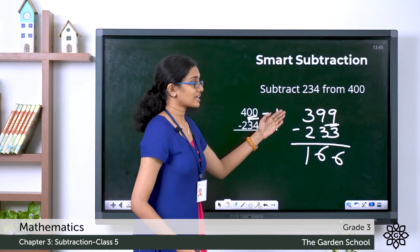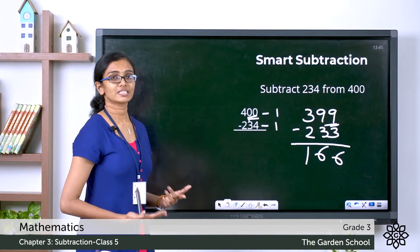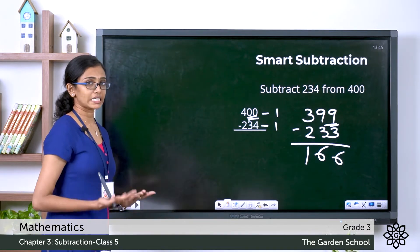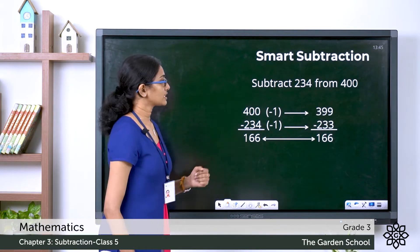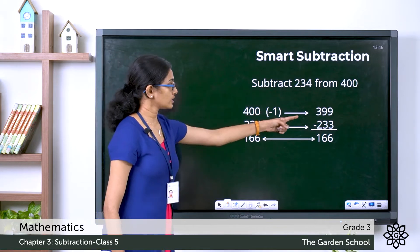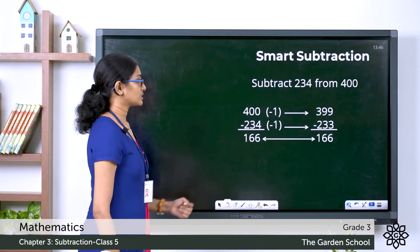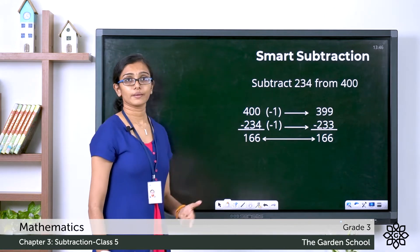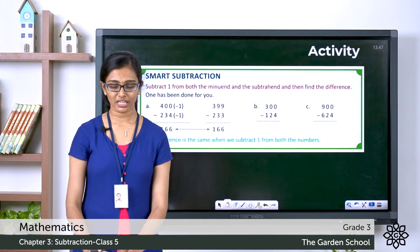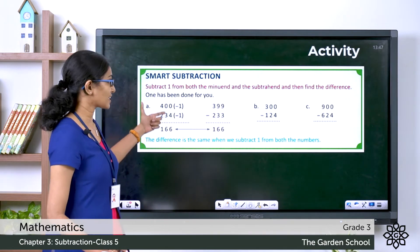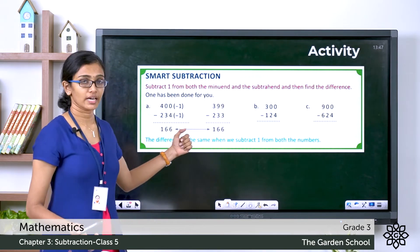So I subtracted 1 from both numbers and the difference remains the same. I hope this is clear. Here the steps are shown once again: 400 minus 1 is 399, and 234 minus 1 is 233. The difference remains the same. In page number 43 of your textbook under the heading 'Smart Subtraction', you can see this box. The example we discussed here is already mentioned there.